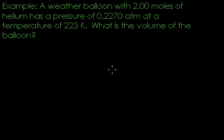In this example, we're going to look at how the ideal gas law applies to a weather balloon. A weather balloon is a balloon that is sent up into the upper atmosphere to take weather measurements at high altitudes. This example is when a weather balloon goes up about six miles into the atmosphere, and we're going to see how that affects the gas inside. If a weather balloon with two moles of helium has a pressure of 0.2270 atmospheres at a temperature of 223 Kelvin, what is the volume of the balloon?